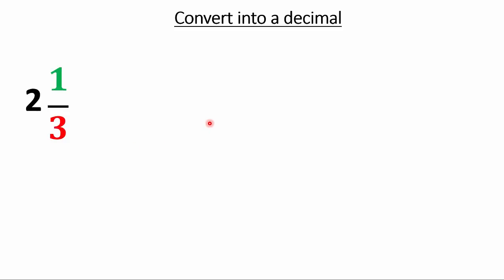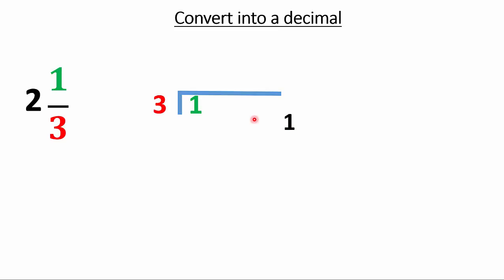Now let's convert a mixed fraction. Some of you are panicking, but you can do this. We have 2 and 1/3. Out of these, which part is the fraction? The 1/3. So focus on that part. Set up 1 divided by 3. Three doesn't go into 1, so write 1.0 — now we have 10 to work with.